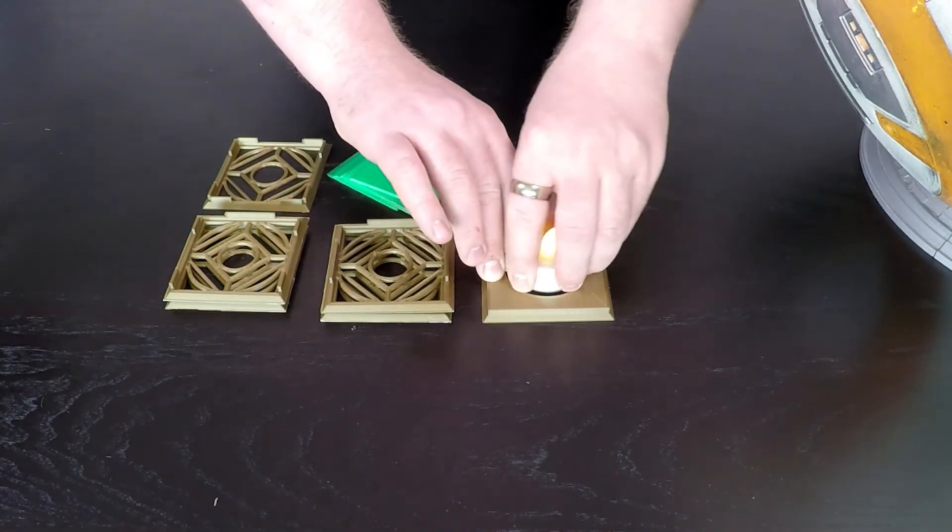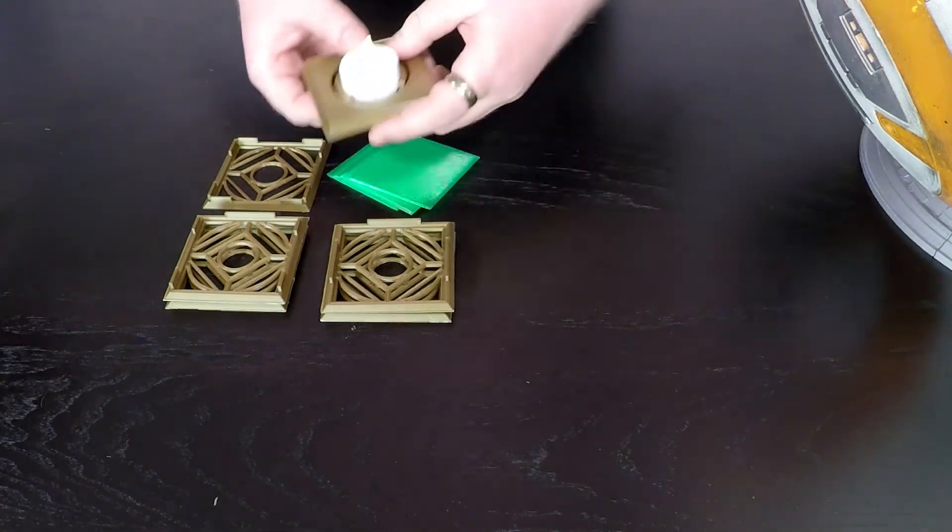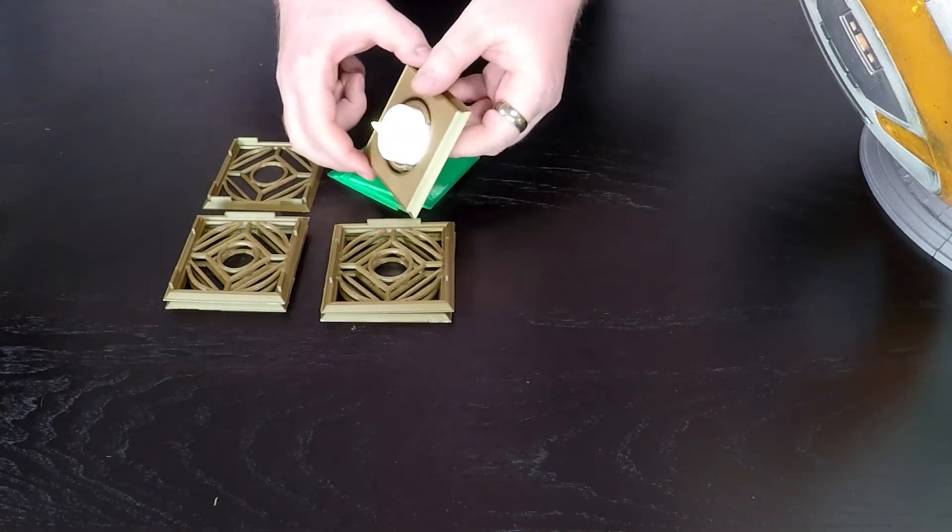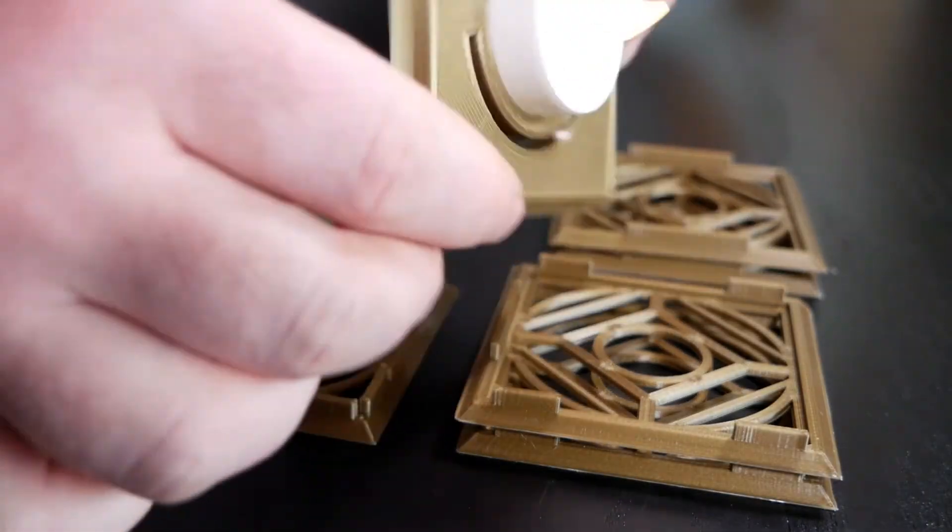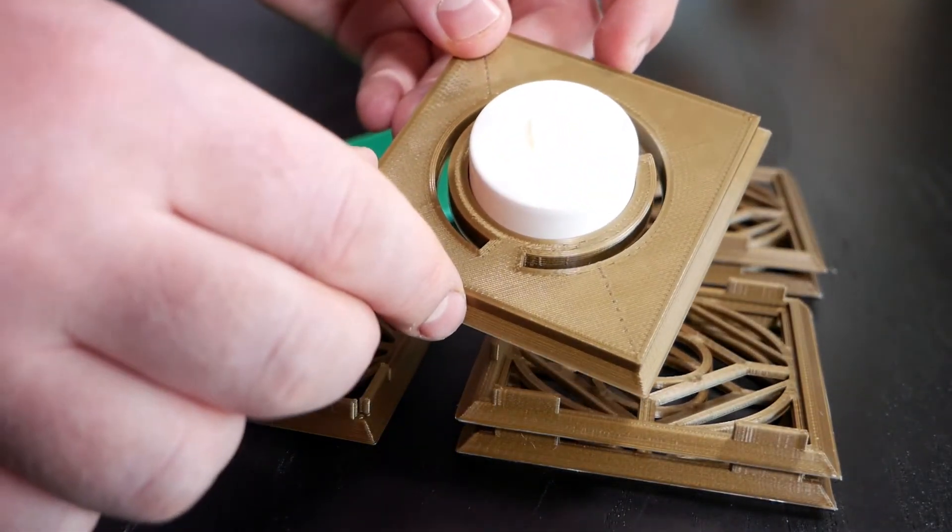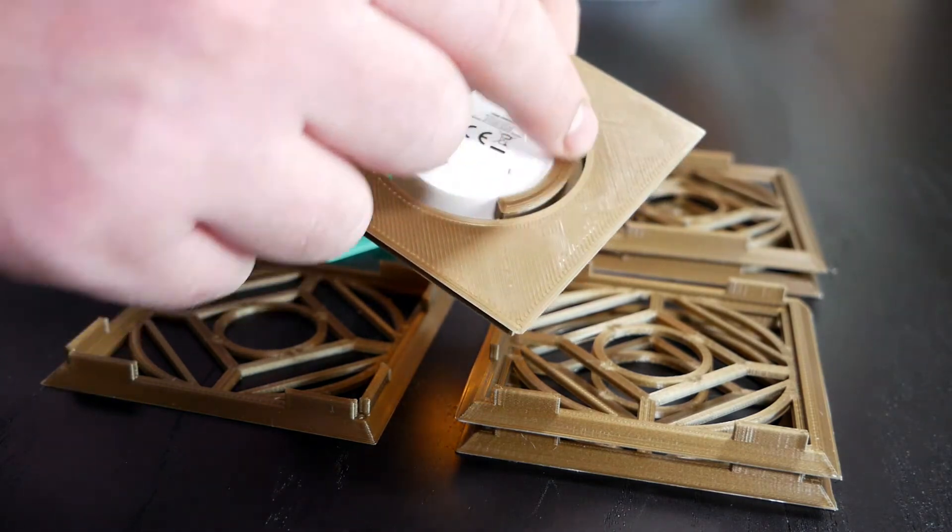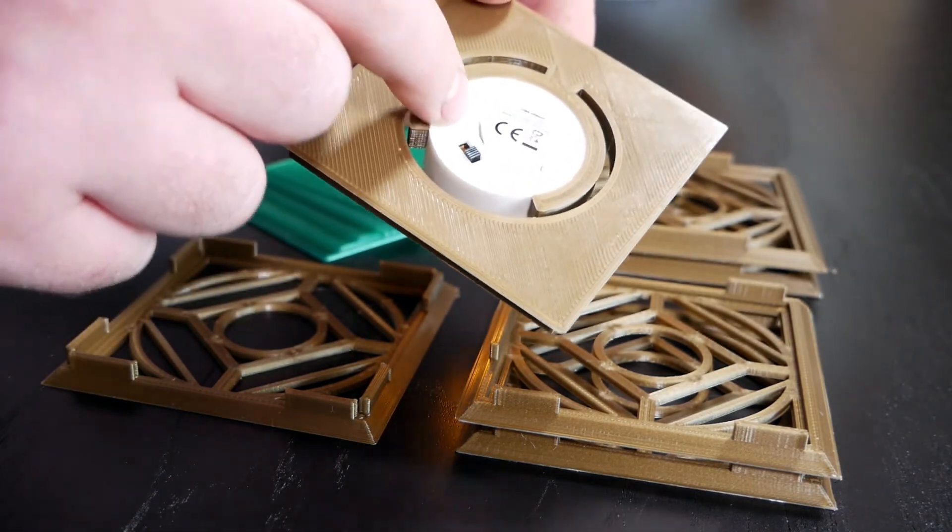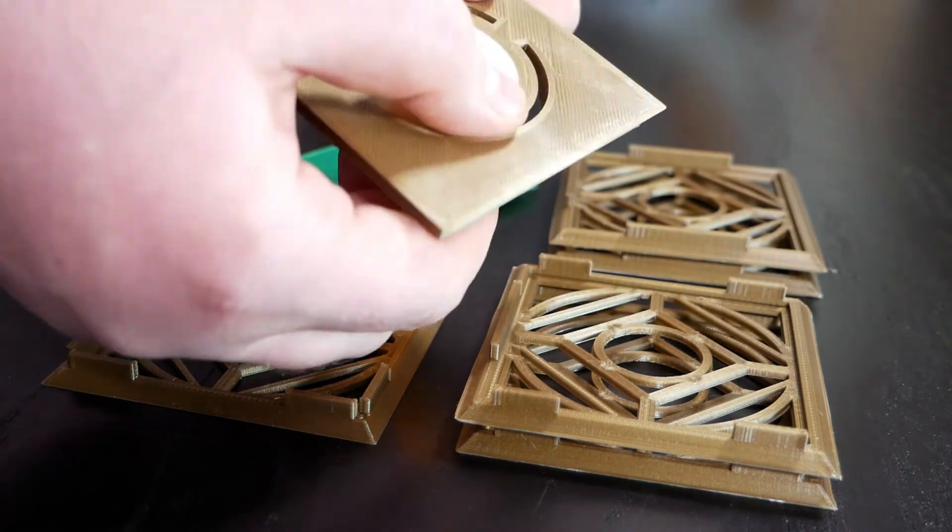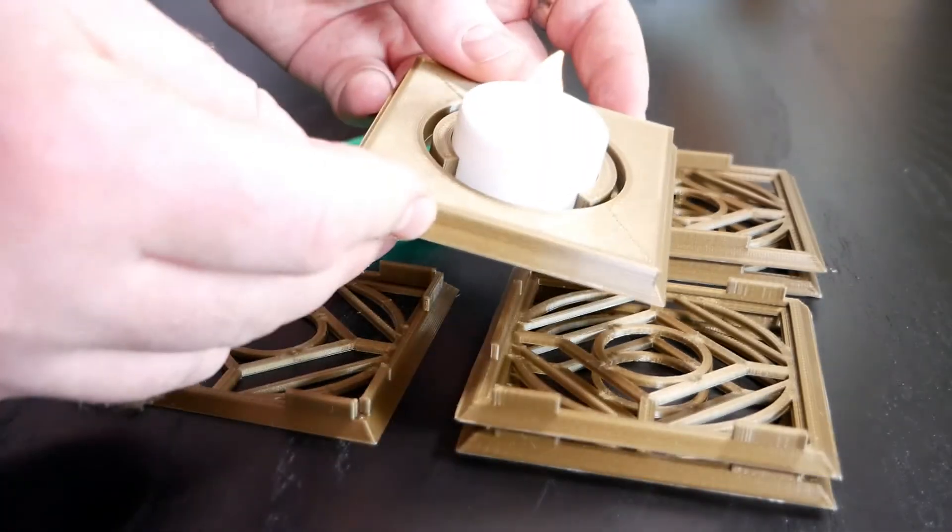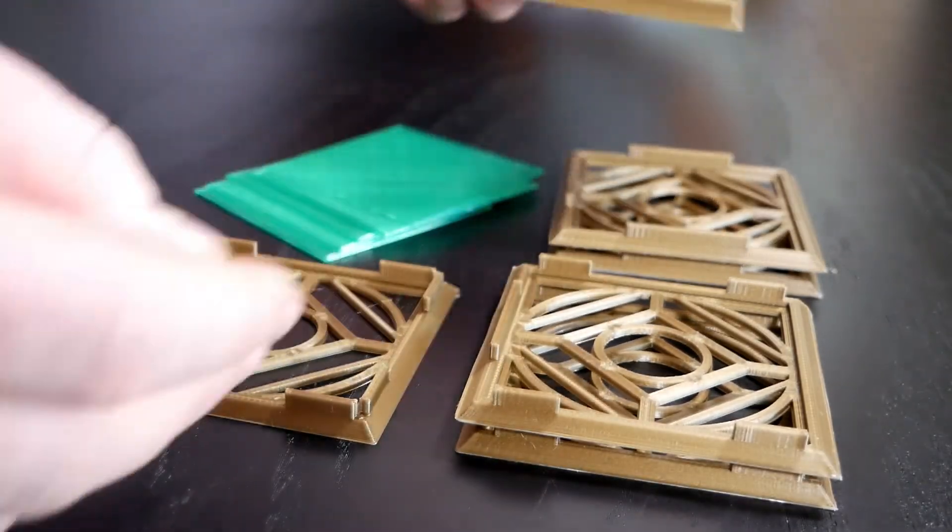Slot it in to the base, and you can see our tolerances have been quite good. It sticks in there, it's not going to come out at all. What's actually helpful here is that little bit of elephant's footing that you sometimes get with FDM printing, that actually gives it a bit of a lip that holds it in place even more. But that's sturdy, that's good, let's keep going.